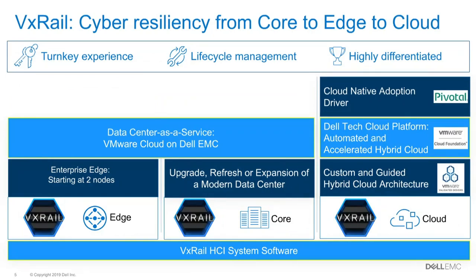Sometimes it helps to double-click on a few things. When we talk core, edge, cloud — that can feel a bit buzzwordy — but we have a number of different ways that VxRail is deployed at customers. When I talk about edge, folks often think of ROBO or small office, but edge can mean a thousand various retail sites across the U.S., or doing edge processing for an IoT application that requires scale.